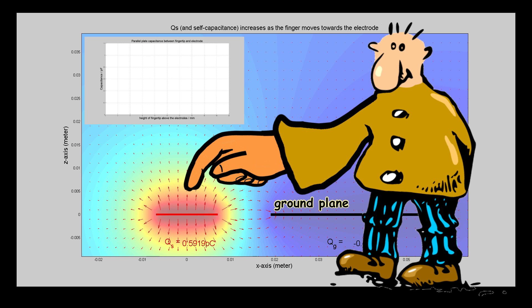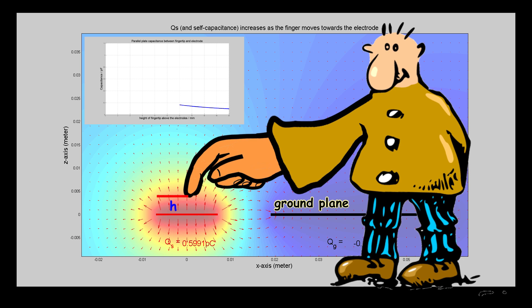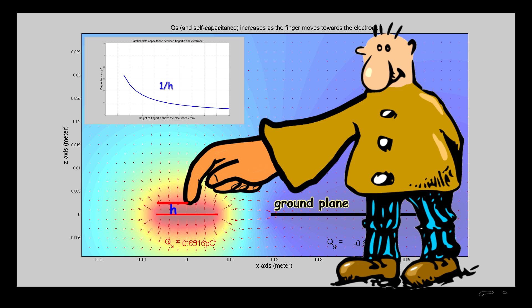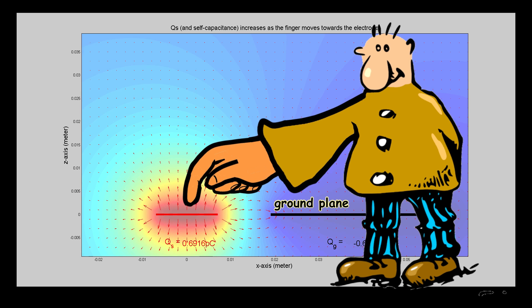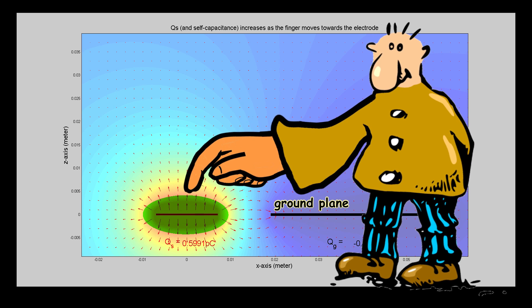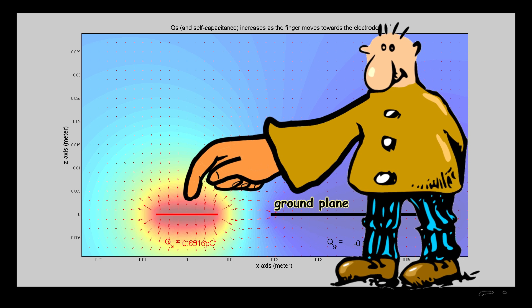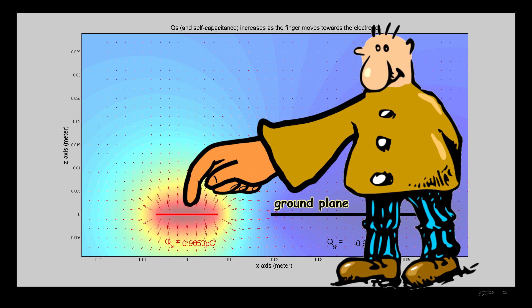In the self-capacitive sensors, the touch electrodes and the fingertip form parallel plate capacitors. As the gap between them closes up, the capacitance increases according to 1 over H. The charges on the electrodes, which are proportional to the capacitance, can be measured to infer the presence of the external object.